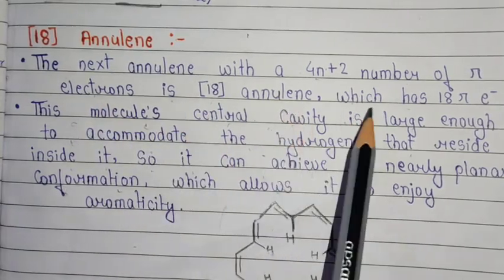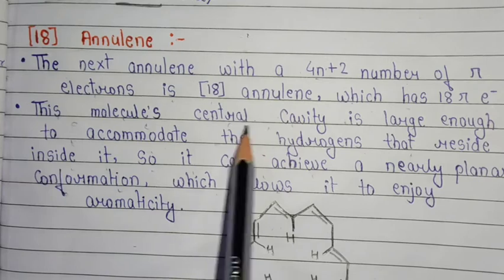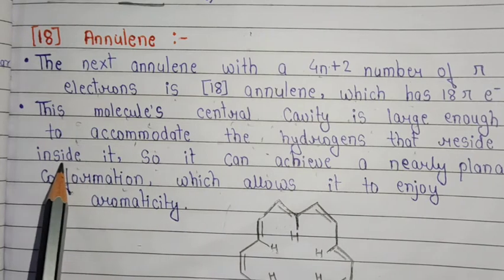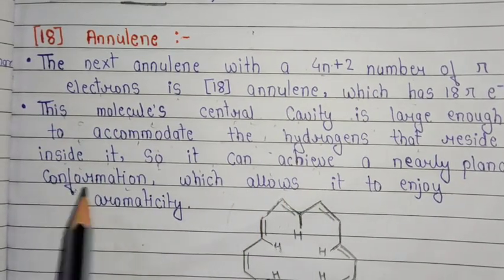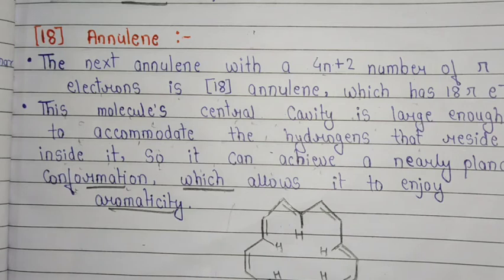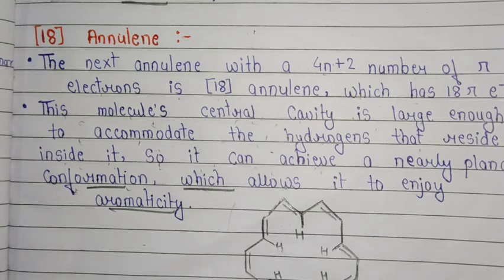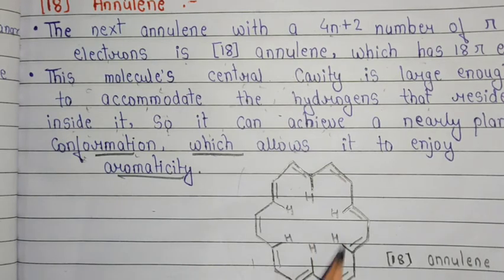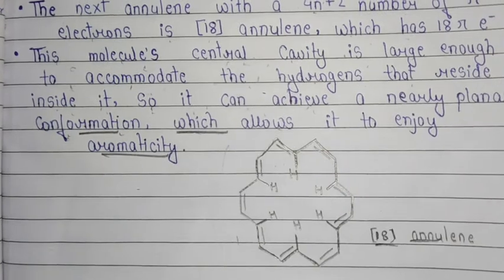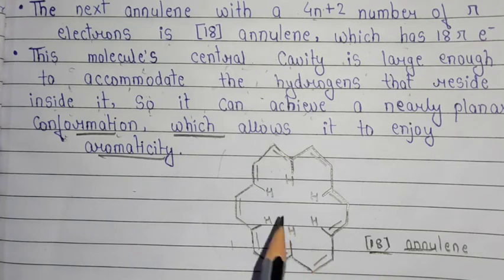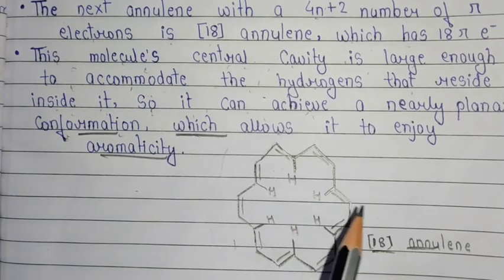So [18]annulene is the next annulin with 4n+2 number of pi electrons — it has 18 pi electrons. This molecule's central cavity is large enough to accommodate the hydrogens that reside inside it, so it can achieve a nearly planar conformation, which allows it to enjoy aromaticity. [18]annulene has a large central cavity, so the hydrogen atoms of this compound have no repulsion. That's why [18]annulene is an aromatic compound.